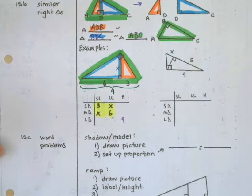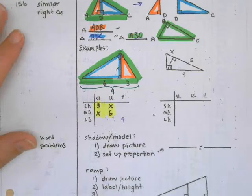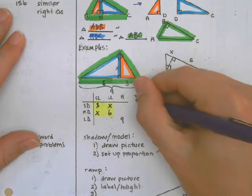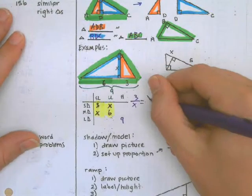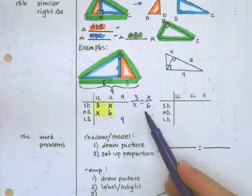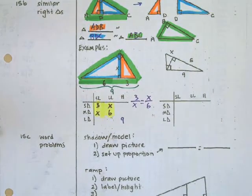We are going to take those four items over to the side, set up a proportion with them and cross multiply.